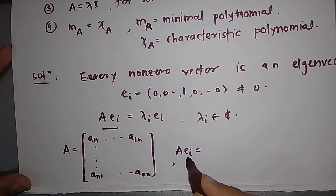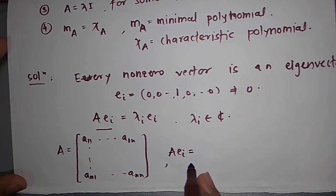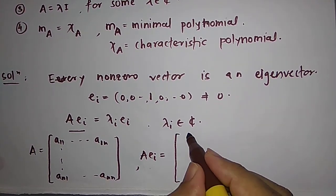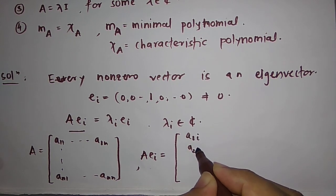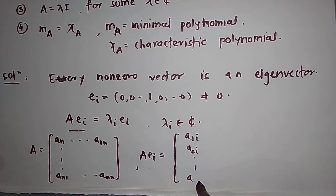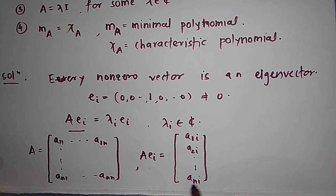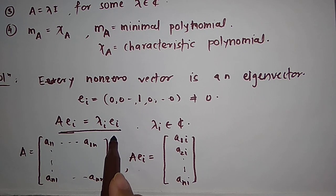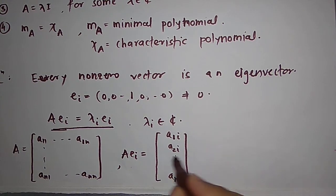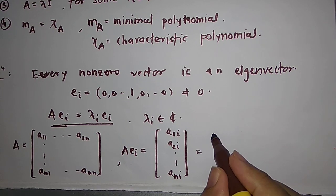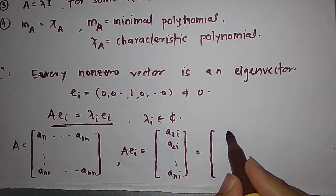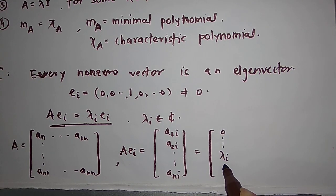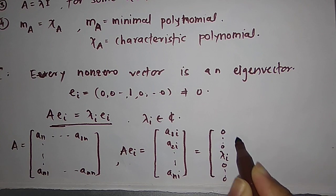A e_i is just the ith column of A. And what is that ith column is A_1i, A_2i up to A_Ni. And this is saying that A e_i is equal to λ_i e_i. What does that mean? A e_i is equal to λ_i e_i. So that means A e_i is equal to just λ_i at the ith position and 0 everywhere else.